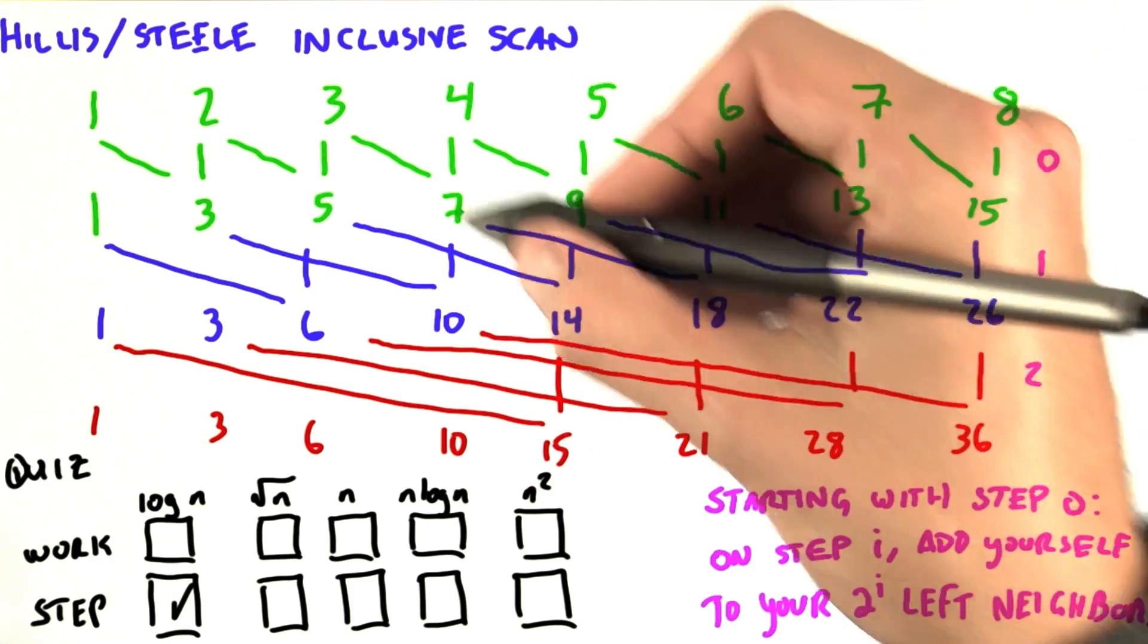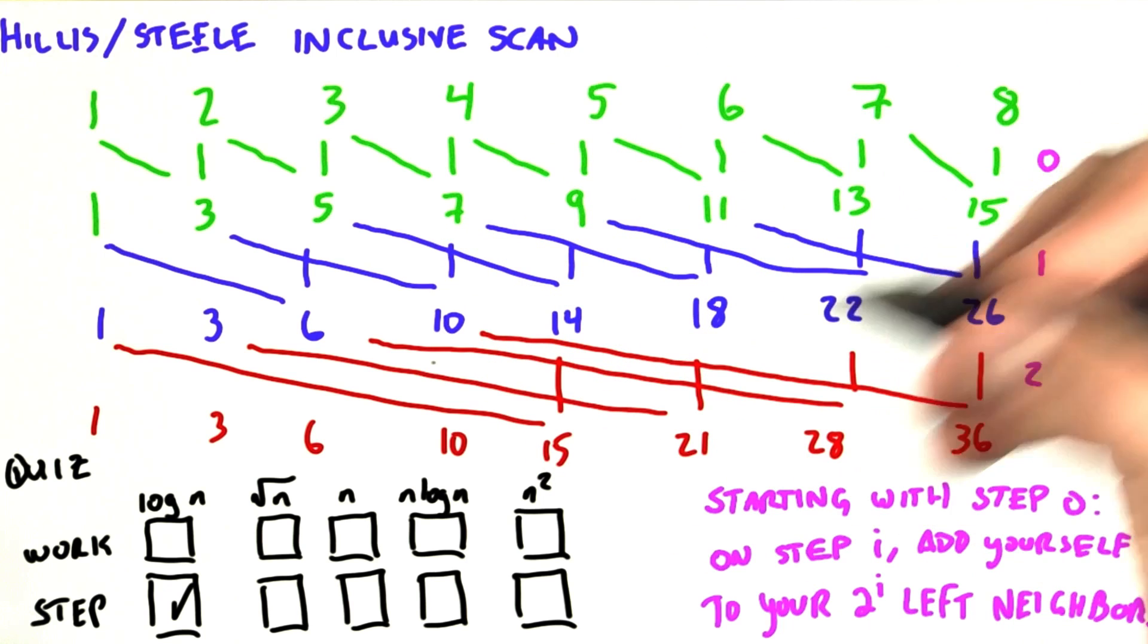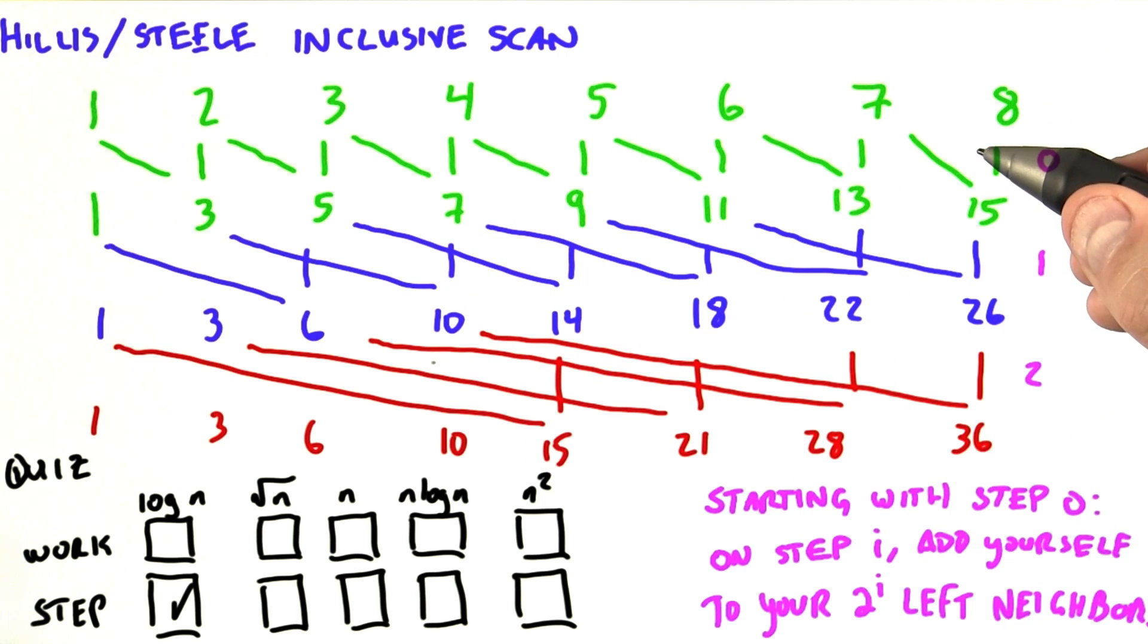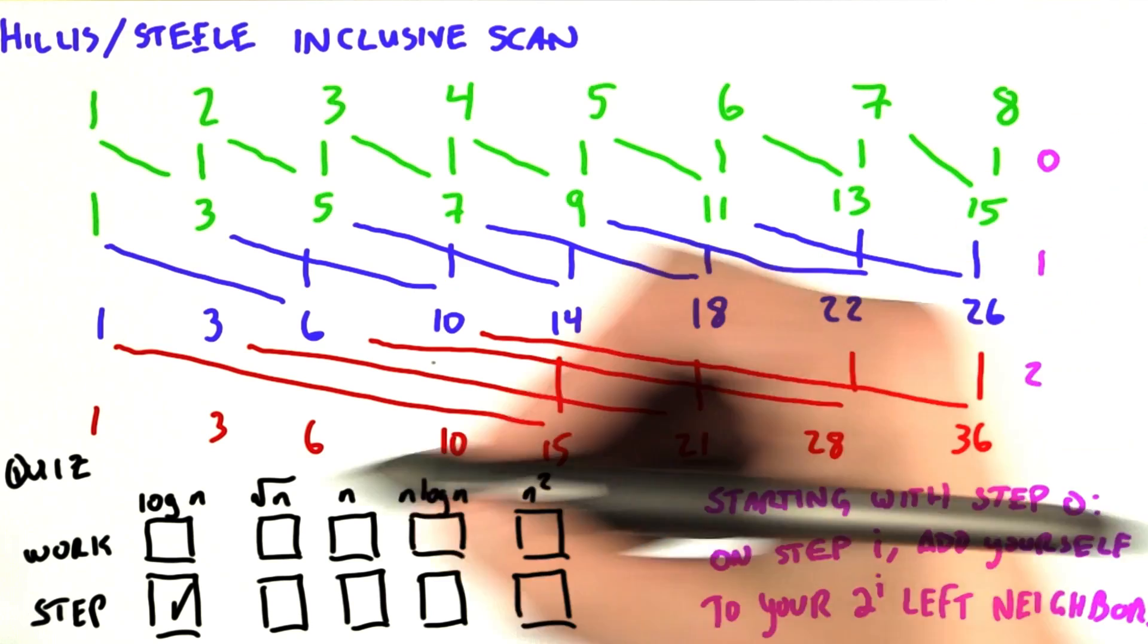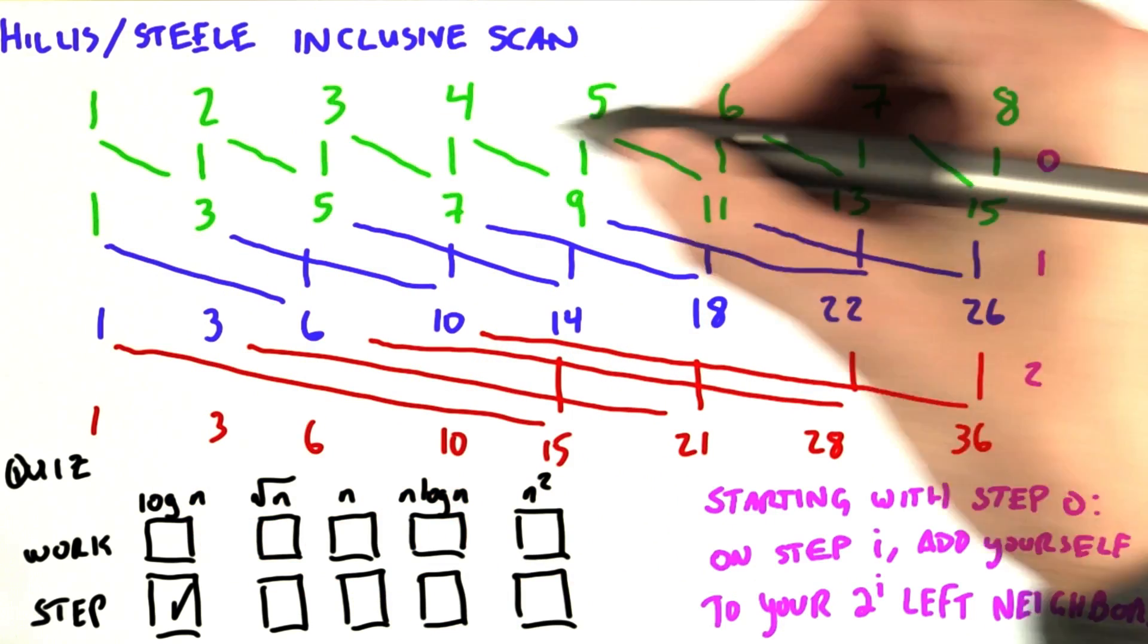Some of those computations are adds. Some of those computations are copies. Turns out if you just consider the adds, the analysis ends up being the exact same. But we're going to say the total amount of work we do, the total number of computations, is simply the area of this rectangle.